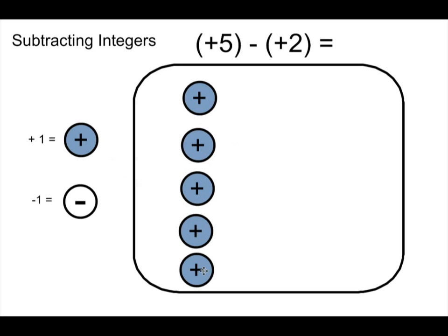Now the math sentence above tells us to take something away from this. It says take away two positives. So I'll simply just take away two of them and cross them out. We're going to take away this one, take away that one. And what do I have left? I've got positive 3. So that's where we get positive 5 take away positive 2 equals positive 3. Done.